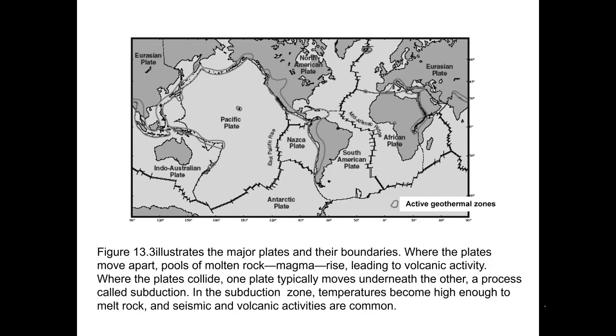This figure from your book illustrates the major plates and the boundaries where the plates move apart. Pools of molten rock, magma, rise leading to volcanic activity. Where the plates collide, one plate typically moves underneath the other in a process called subduction. In the subduction zone, temperatures become high enough to melt rock, and seismic and volcanic activities are common in these areas.